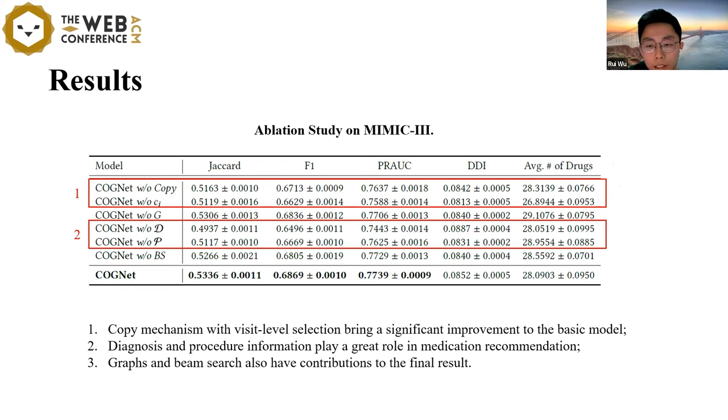To verify the effectiveness of each module of COGNet, we designed several ablation models. Overall, the complete COGNet outperforms all ablation models, which means that each component of our model is important. We can also draw some other conclusions. First, the copy module with visit-level selection brings a significant improvement to the basic model. Second, diagnosis and procedural information play a greater role in medication recommendation. Finally, graphs and beam search also have contributions to the final result.